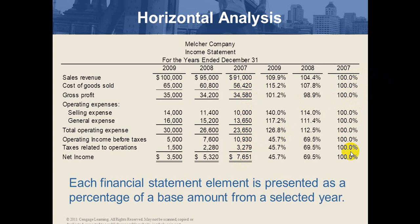In trend analysis, the formula is: current year divided by base year, times 100%. For example, for net sales in 2009: 100,000 divided by 91,000 equals 109.9%. For cost of goods sold in 2009: 65,000 divided by 56,420 equals 115.2%.